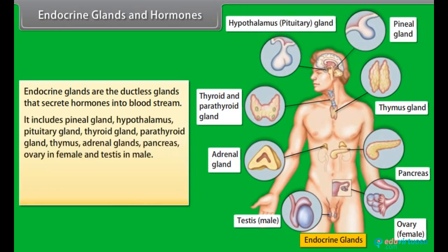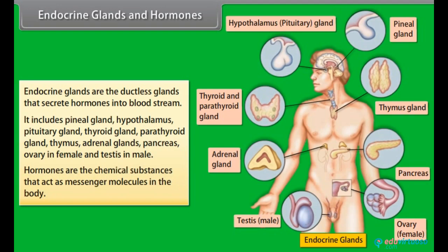Endocrine glands include the pineal gland, hypothalamus, pituitary gland, thyroid gland, parathyroid gland, thymus, adrenal glands, pancreas, ovary in female and testis in male. Hormones are the chemical substances that act as messenger molecules in the body.